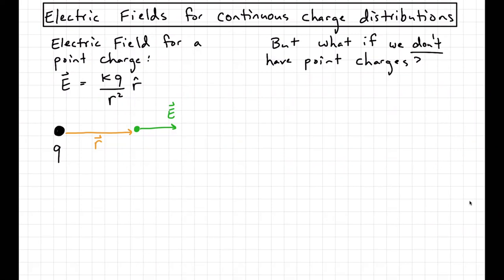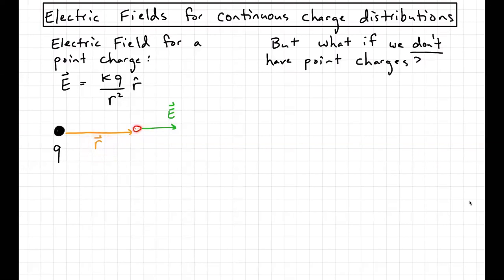We've talked about electric fields a little bit, and for a point charge — say this charge q right here — if you want to know the electric field at a point in space some displacement r away from that point charge, we use Coulomb's law. The electric field is k, Coulomb's constant, times the magnitude of the charge divided by the magnitude of the distance squared, in the r-hat direction.